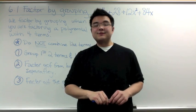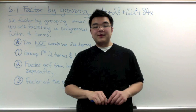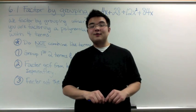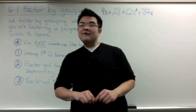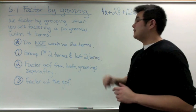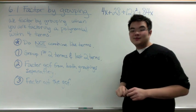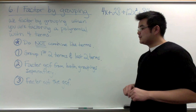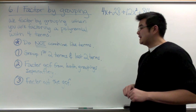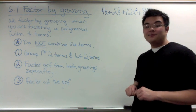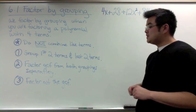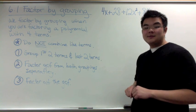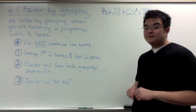These are the video notes for section 6.1, factor by grouping. We factor by grouping when factoring a polynomial with four terms. The pre-step is: do not combine like terms, as it may be tempting. Step one: group the first two terms and the last two terms by underlining. Step two: factor the GCF from both groupings separately. Step three: factor out the common GCF.